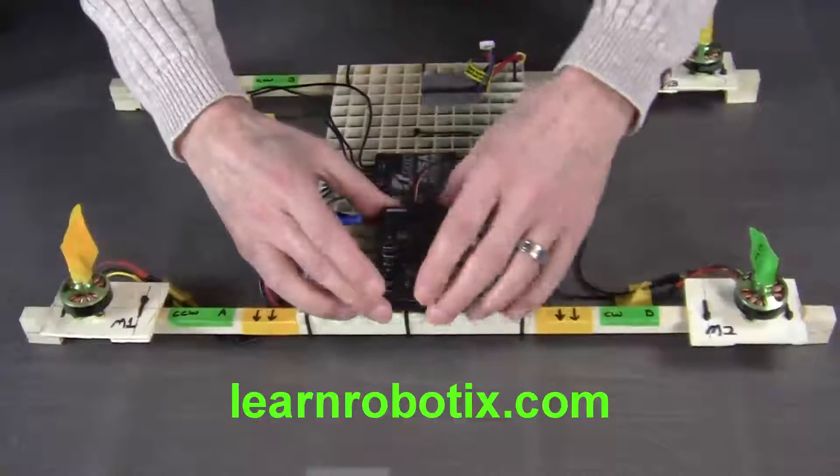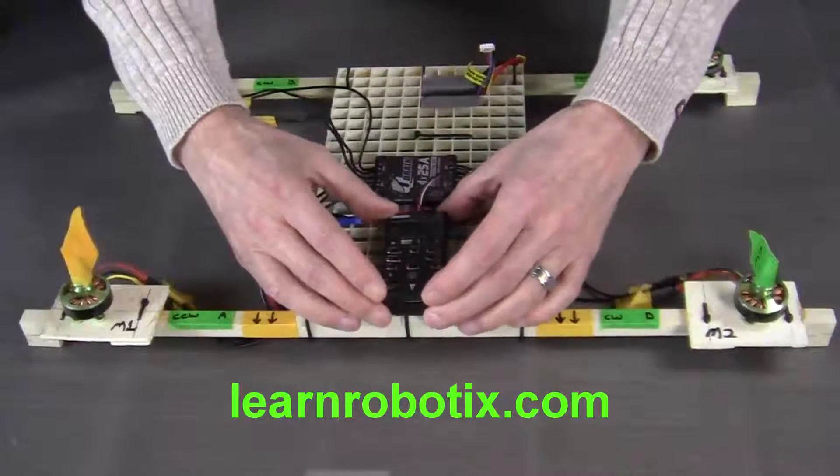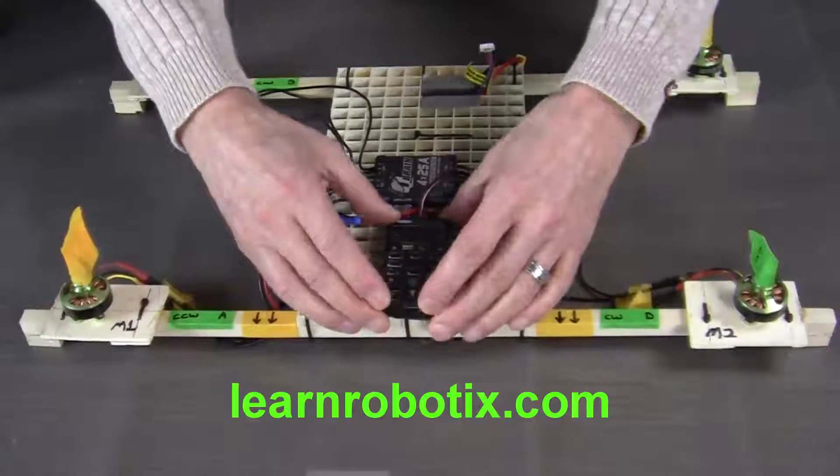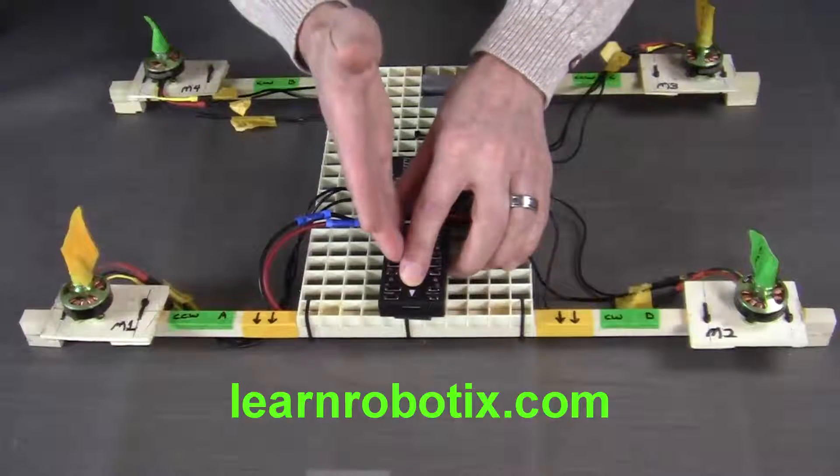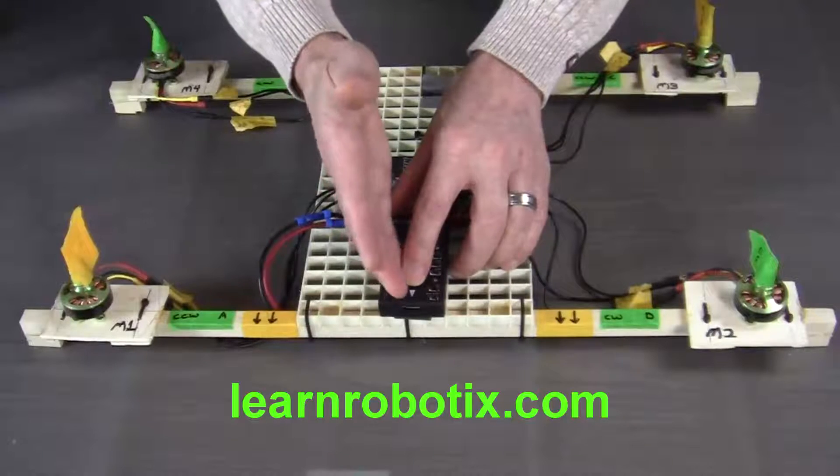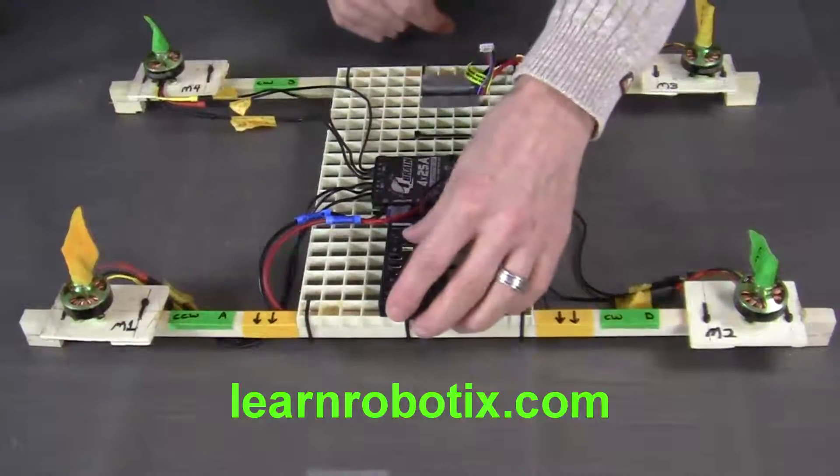Then when we position the Pixhawk, you'll notice that there's a directional arrow which tells you that that directional arrow must point to the front of the quadcopter.